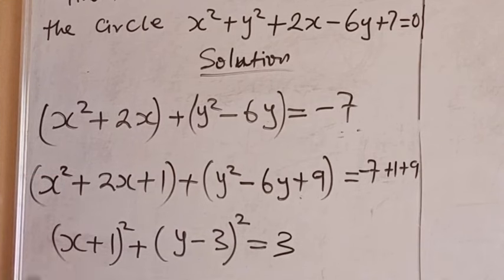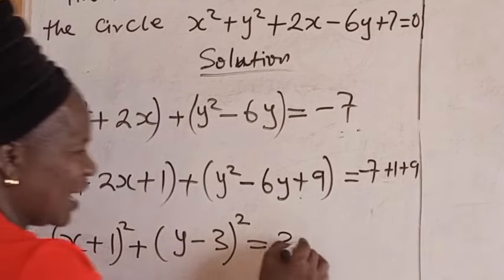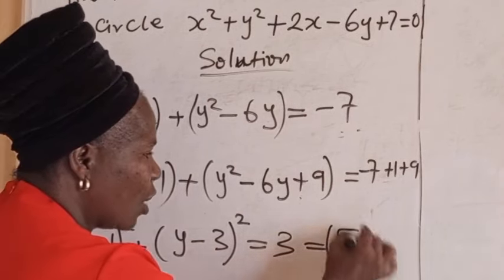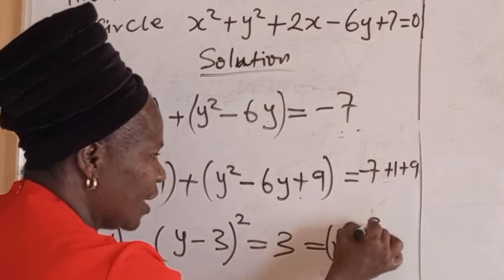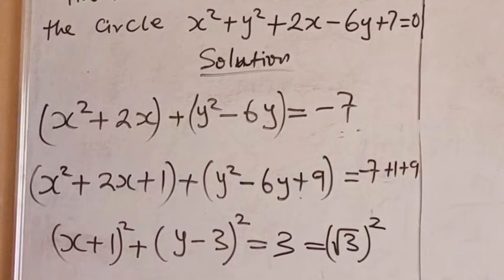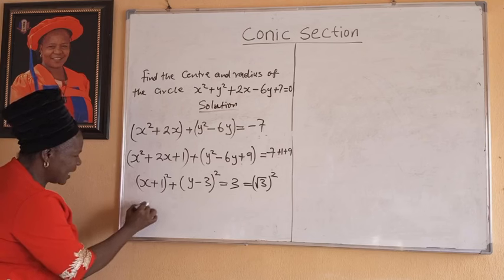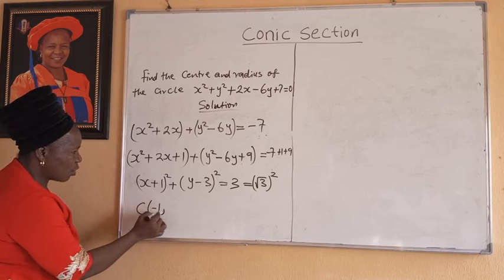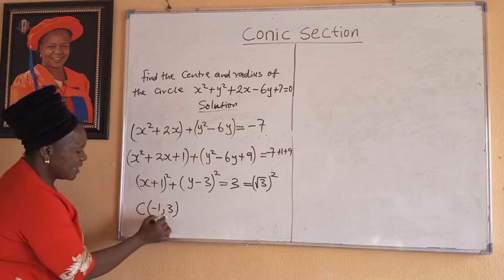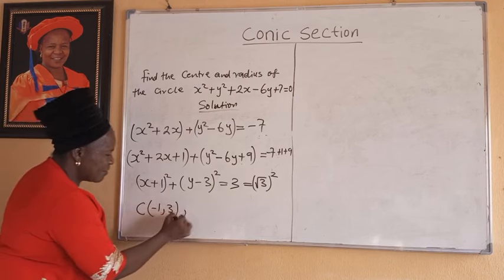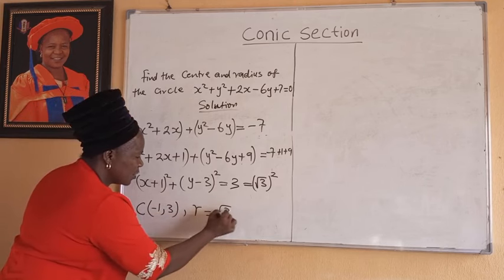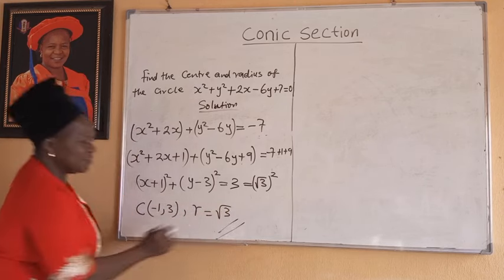This 3 is the same as (√3) squared. So it is now in standard form. The center is (minus 1, 3) and the radius is √3. And we are done.